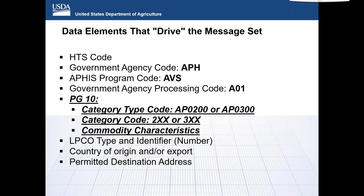One of the most important data elements that drives the message set is PG10. The PG10 record line is a primary architecture used to help stakeholders correctly report commodities within the APHIS core message set. It supports the ability to filter and efficiently align commodities into specific groups. The main data element, commodity category type, is the top-level grouping which allows commodities to be lumped or split using commodity categories and commodity characteristics. For APHIS Veterinary Services, the two commodity category types are AP0200 or AP0300, and the category codes fall in the 200 or 300 series respectively.